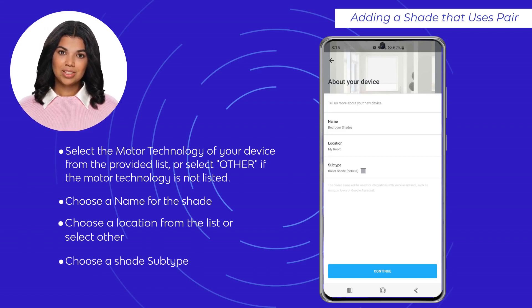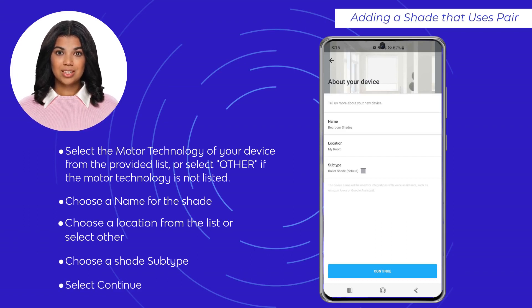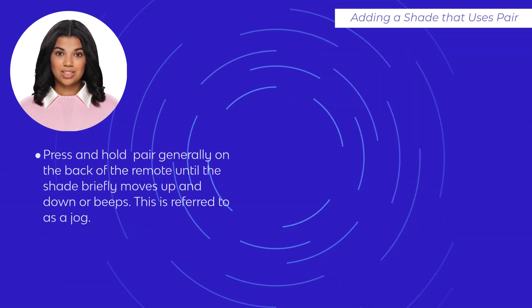Choose a location from the list or select Other and create your own. Choose a shade subtype — this is used to display the actual type on the application main screen. Then select Continue.